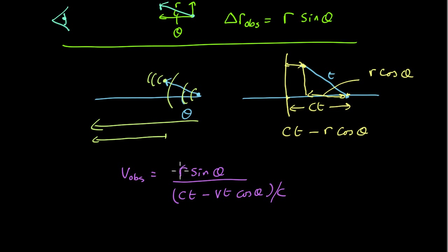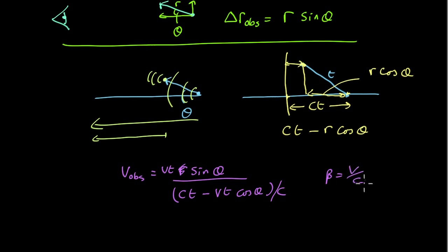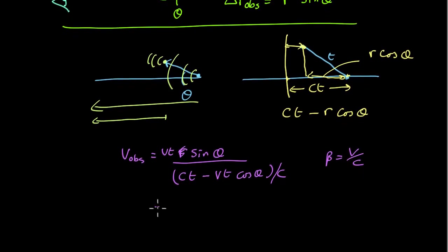And also, up here we know that r is actually just equal to v times t again. So that comes out, let's make the substitution that beta equals the fraction of the speed of light. That comes out as beta sine theta all over 1 minus beta cos theta times the speed of light.